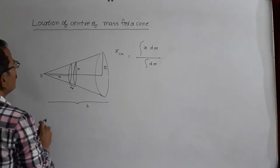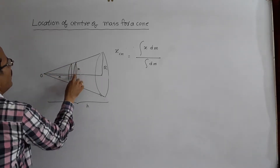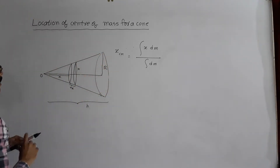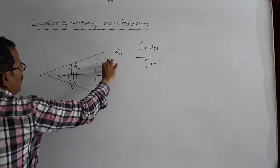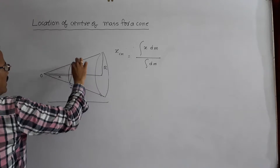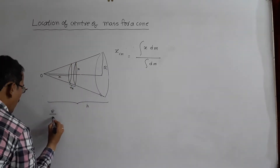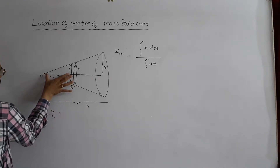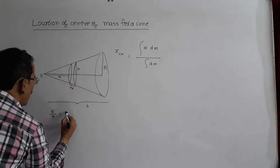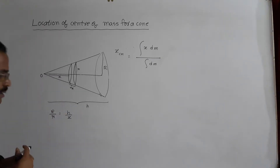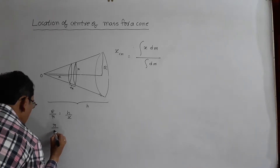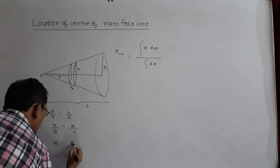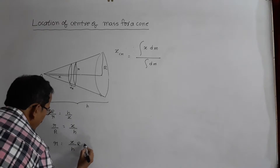This small triangle and the big triangle are similar. For the big triangle, this length is R. For the small triangle, this length is small r. So r/R = x/H, which gives us r = Rx/H. This is equation number 1.